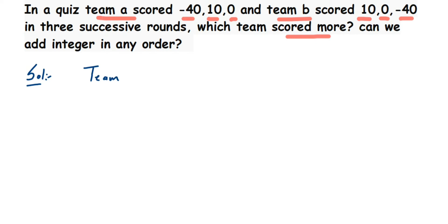First is team A. Team A has scored -40 + 10 + 0. Let's add these three integers. So -40 plus 10 - you can see the signs are different. Different signs means we subtract them. 40 minus 10 is 30, but 40 is the greater number with a negative sign, so we get -30. The third number is 0, so -30 plus 0 is obviously -30.